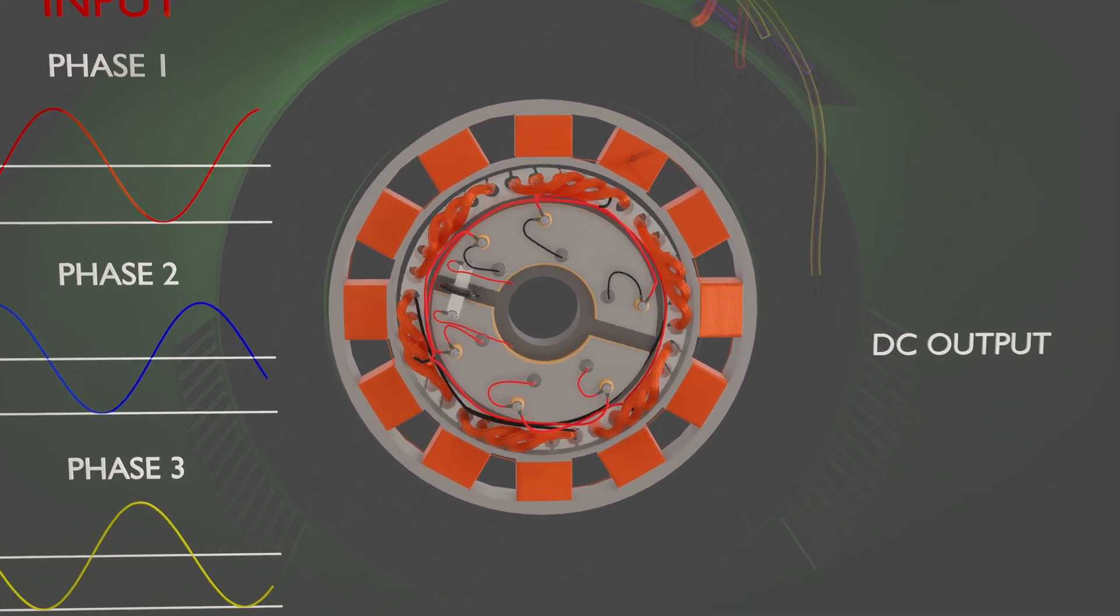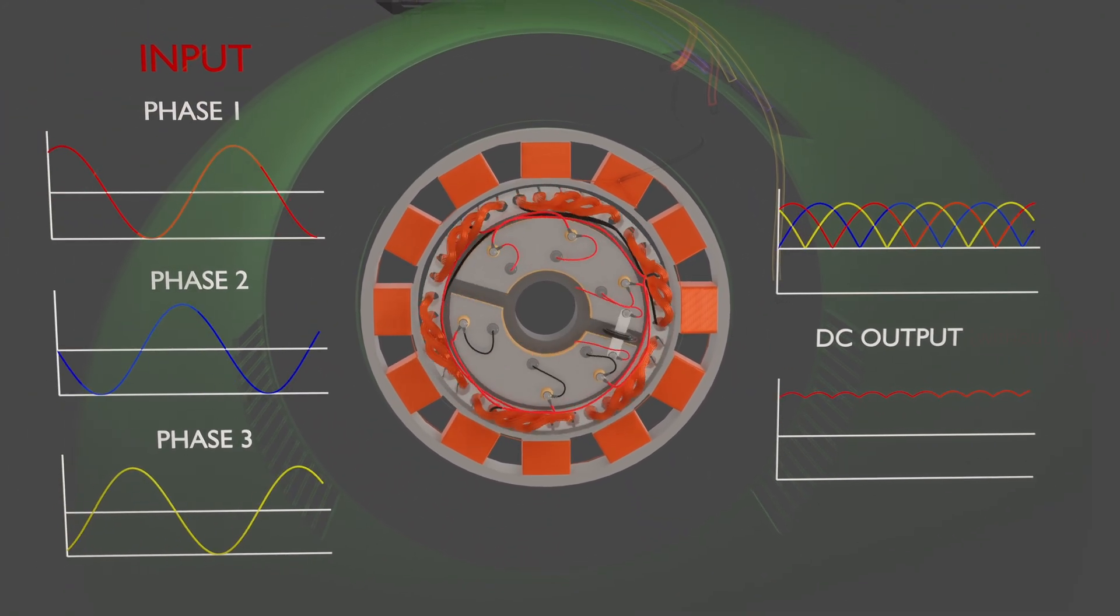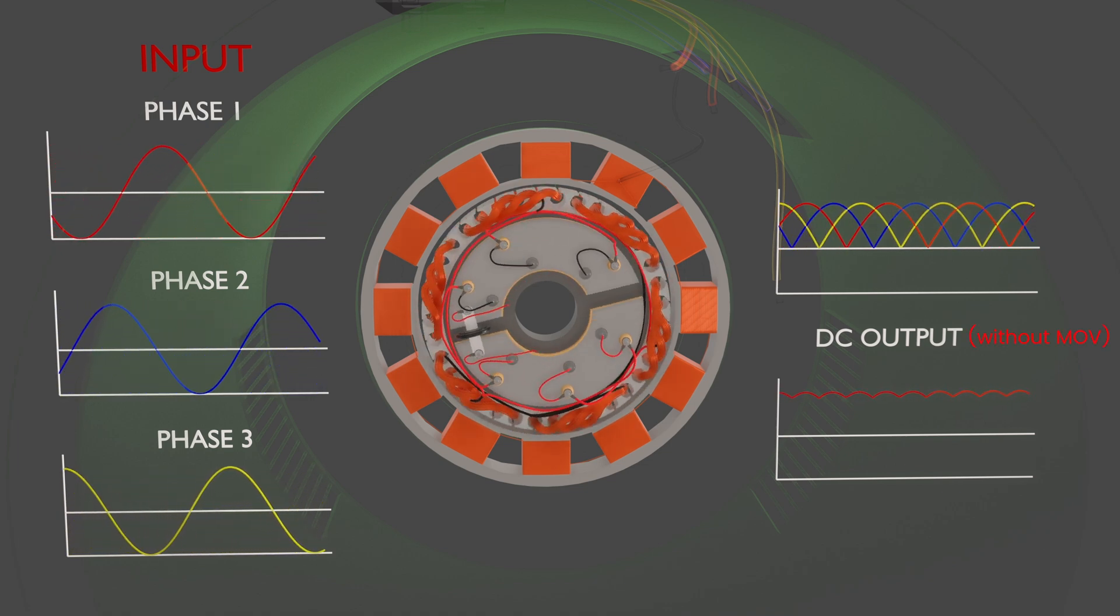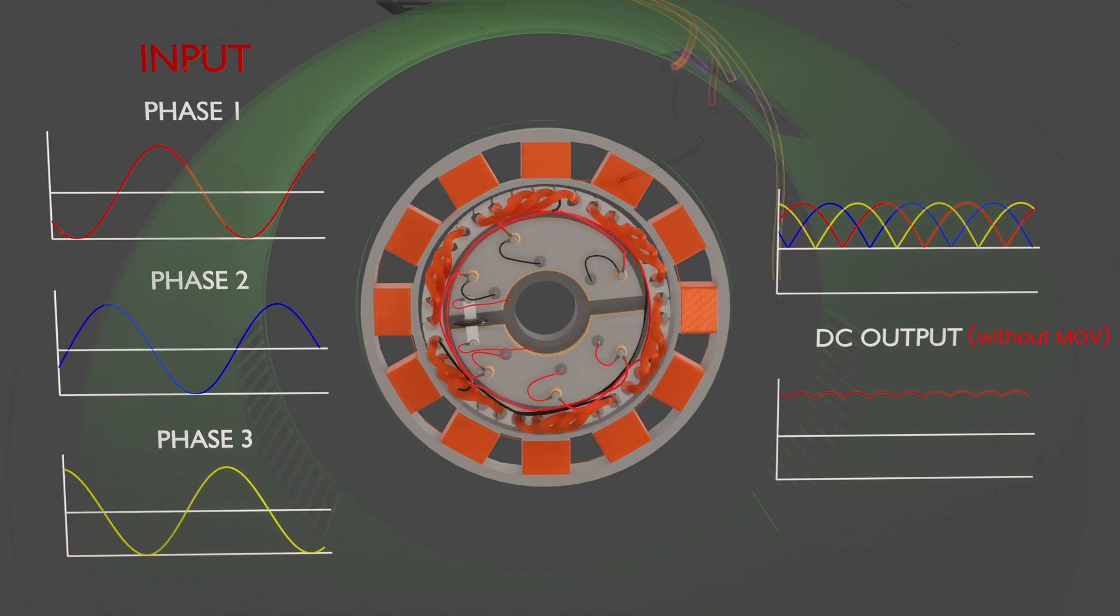If we consider how AC current is converted to DC, positive half cycles remain positive, while negative half cycles are inverted to positive by the rectifier diodes.